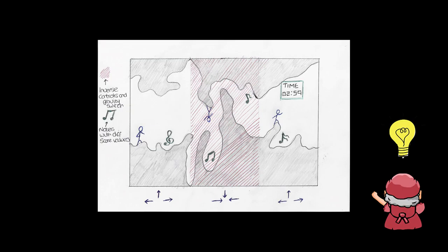I woke up one morning with a pun — I mean idea — etched at the forefront of my brain. What if we could manipulate sound and gravity in the same instance? I grabbed my notepad and almost instinctively wrote 'inverse' at the top of the page, along with a rudimentary musical note. I continued to sketch a stick figure man and the linear path he would traverse along. I sectioned off some areas and declared them to be zones. These zones would not only flip the player upside down, but they would reverse game audio and match the tempo of the audio with the player's movement speed, increasing or decreasing as they moved around.